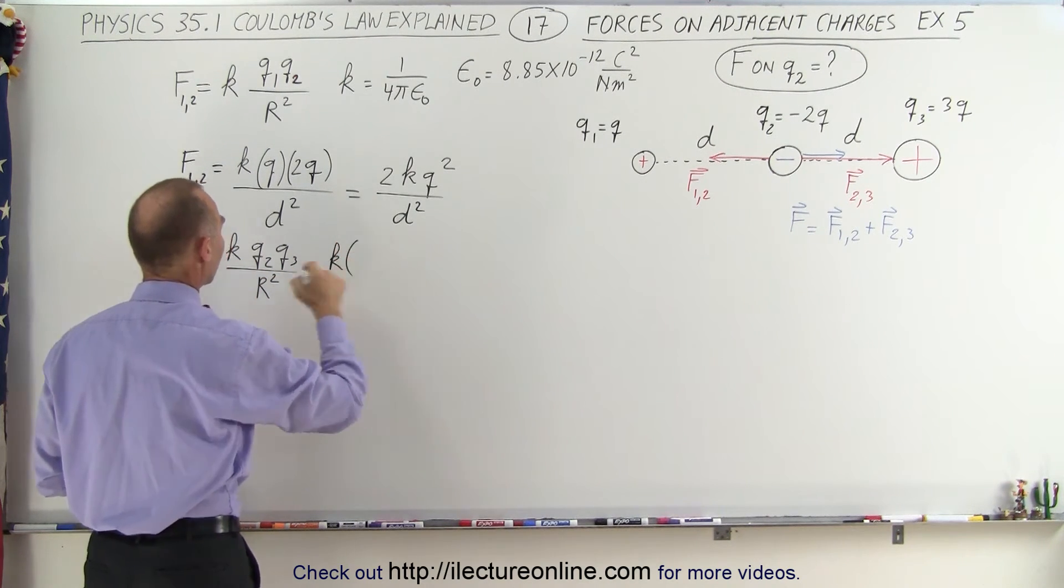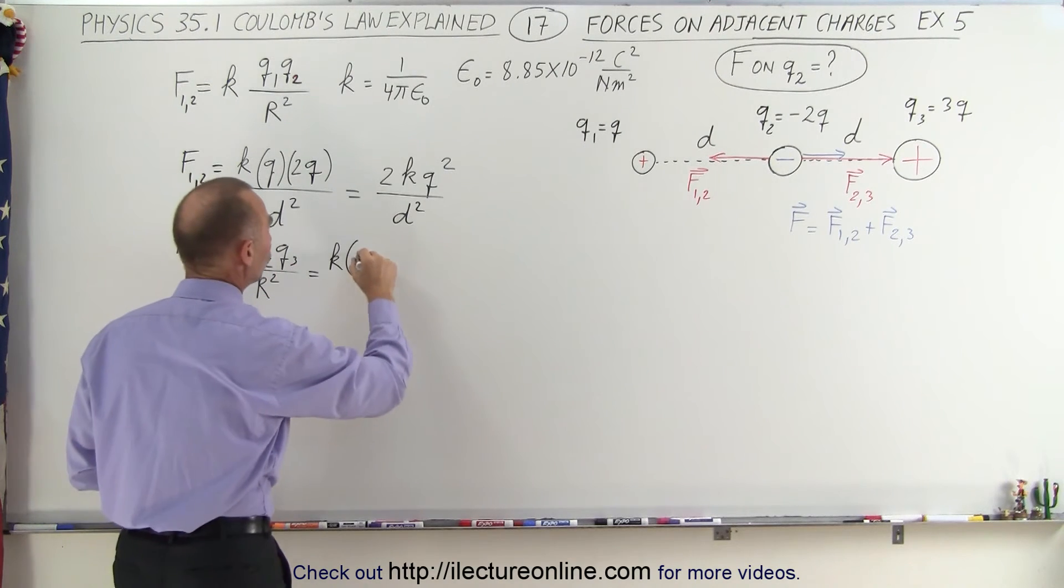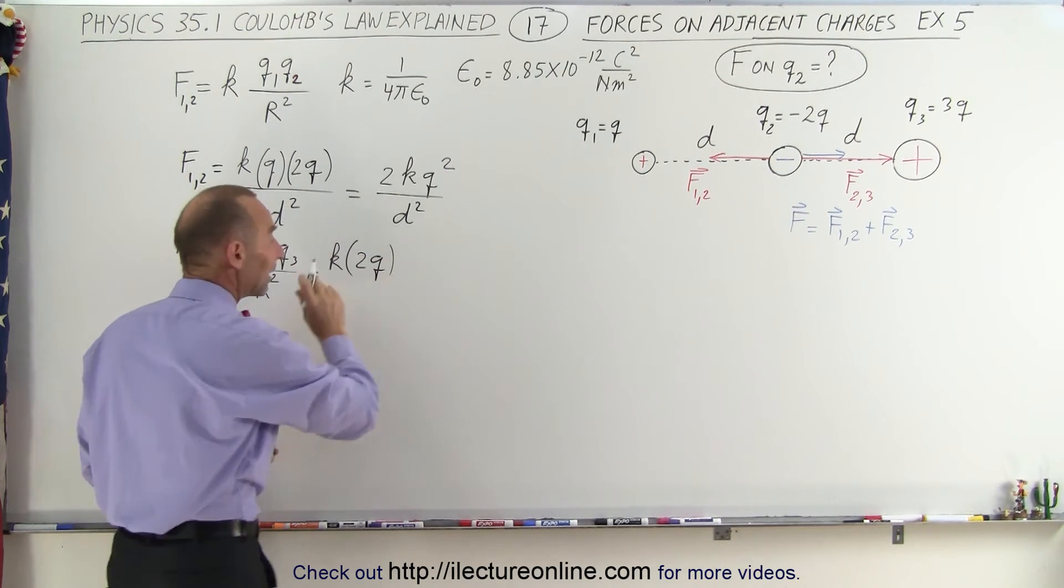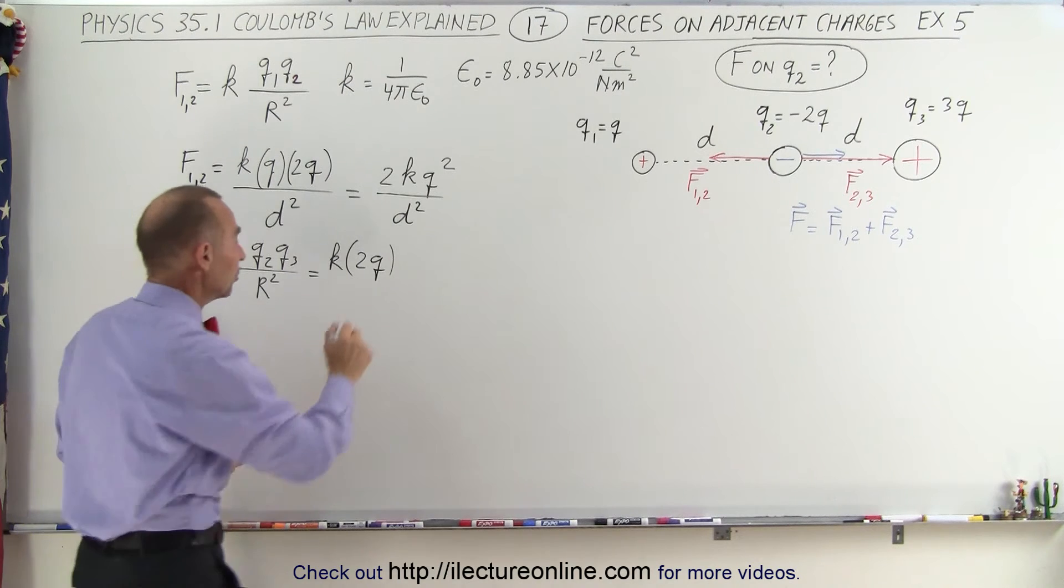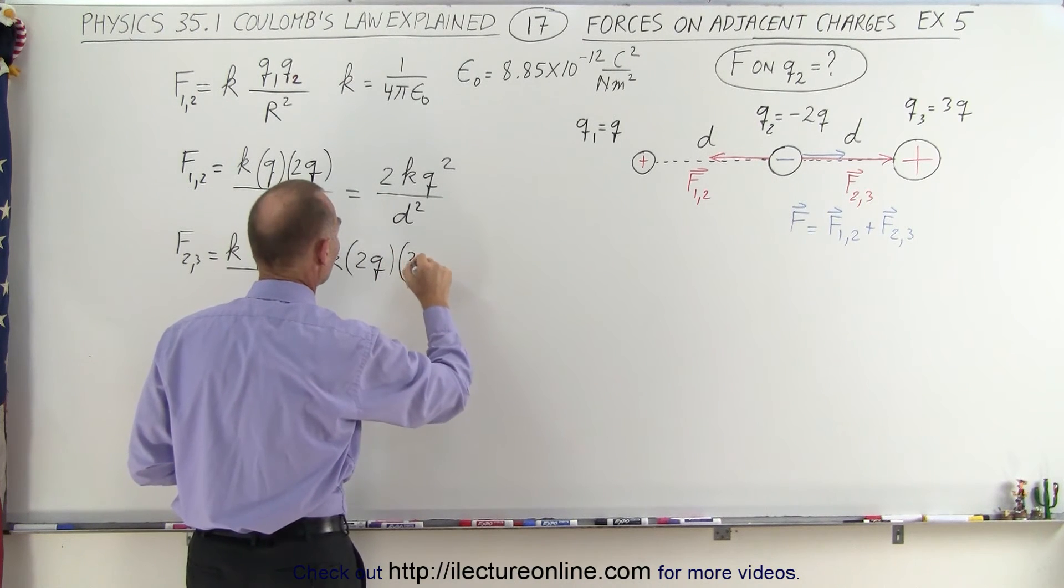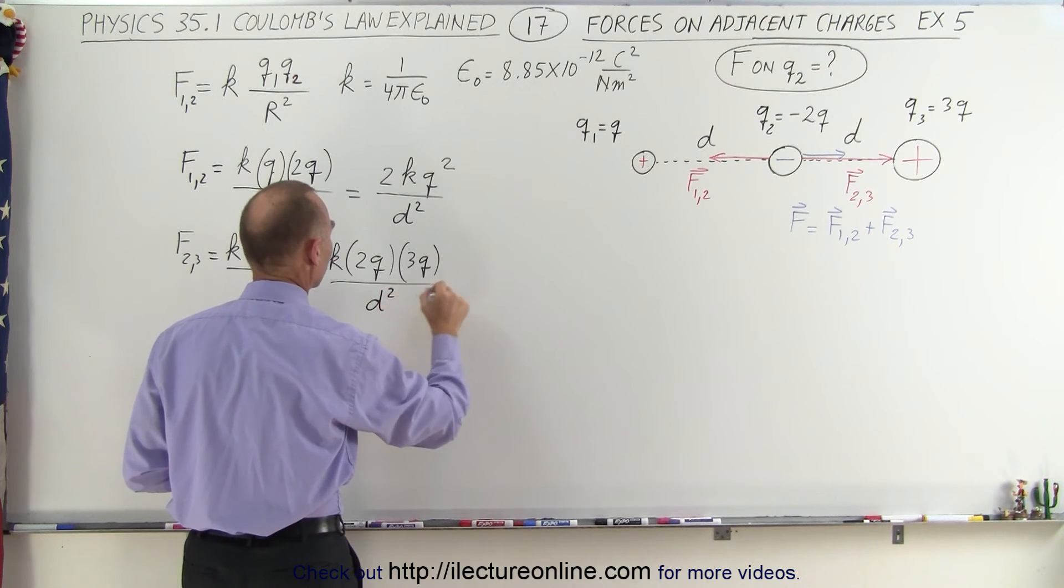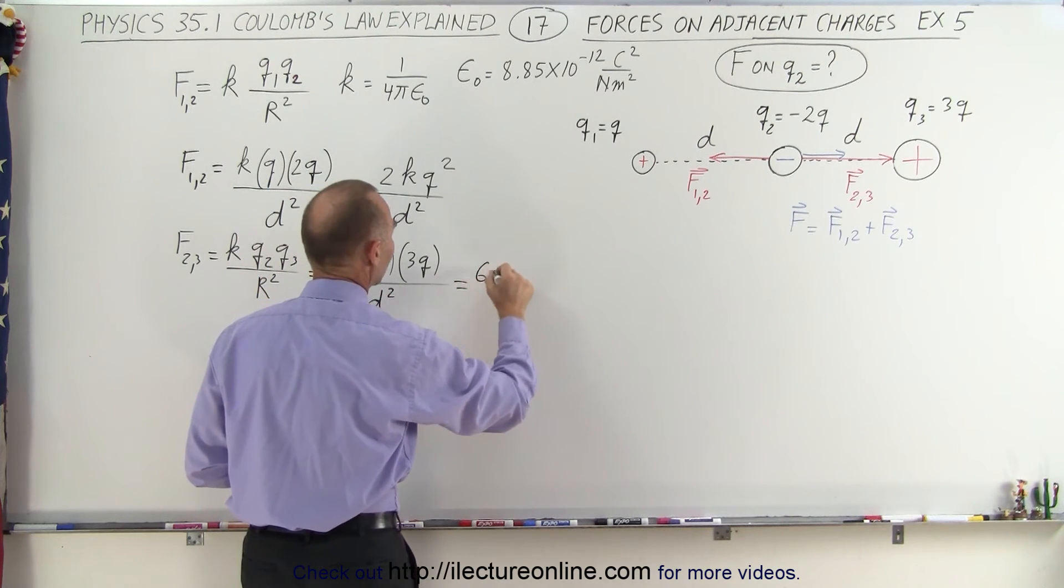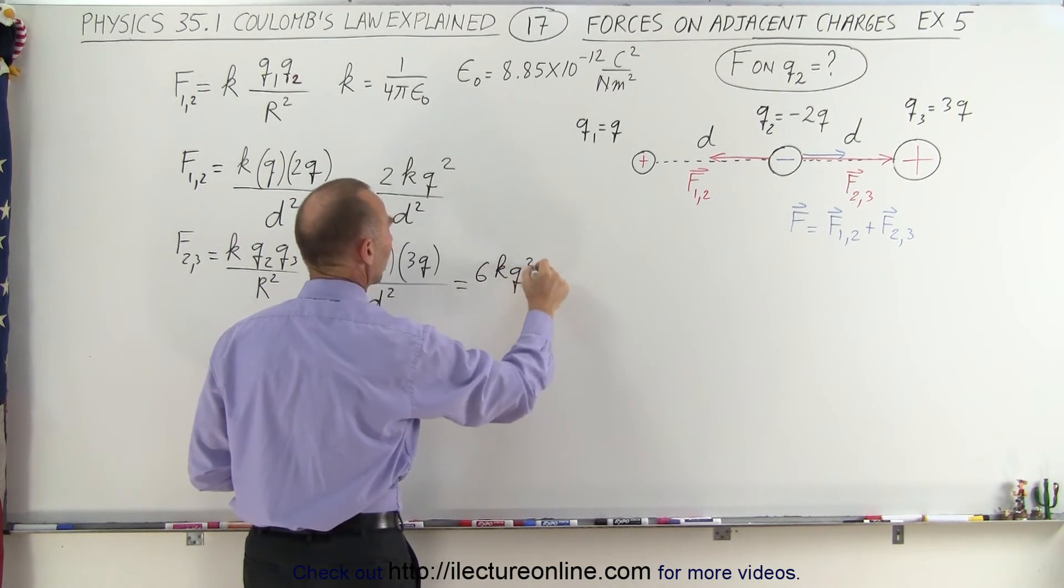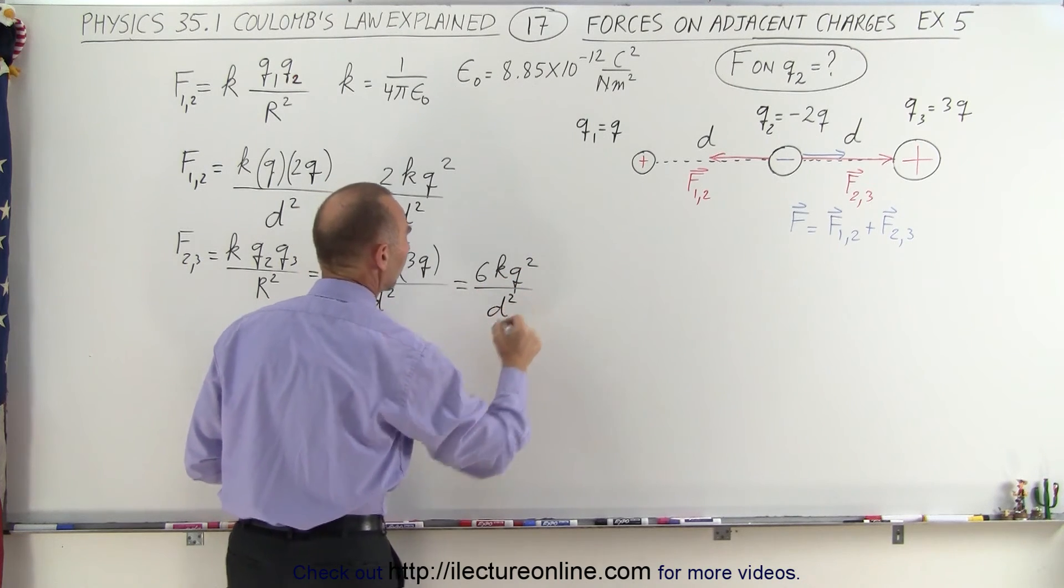that would be K times Q2, which is 2Q. Again, we don't write the negative sign because we just want to find the magnitude, times Q3, which is 3Q, all divided by D squared, which ends up being 6KQ squared divided by D squared.